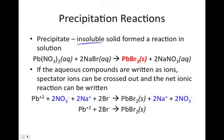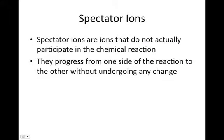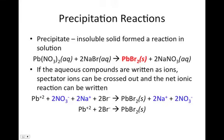If the aqueous compound is written as ions, spectator ions here can be crossed out. Anything that was written as aqueous is ionized. The two NO3s can be canceled out, the two Nas can be canceled out, leaving behind the only guys that actually do anything in a reaction, the lead and the bromine ions that come together to form the solid lead bromide. Spectator ions are any ion that doesn't actually do anything in the chemical reaction except just sit there and watch it happen. The sodium ion went from reactants to products and didn't change at all.